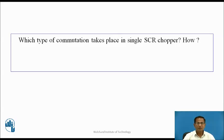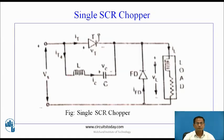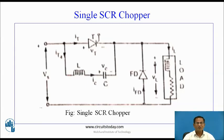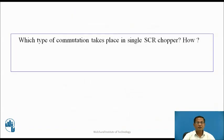Which type of commutation takes place in the single SCR chopper and how? Here, current commutation takes place. In mode 0, the capacitor starts charging. In mode 1, when the thyristor conducts, the capacitor first discharges in the clockwise direction, then charges with the right plate positive and left plate negative. Again the capacitor discharges, and this time the discharging current flows in the opposite direction of the main thyristor. So when this current crosses the load current, the main thyristor turns off. This is current commutation.